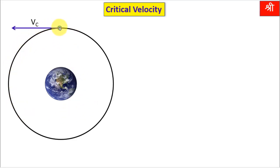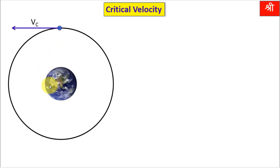This critical velocity is very important. If the horizontal velocity given to the satellite by the second stage of the rocket is not exactly equal to critical velocity, then the satellite will not revolve in a circular orbit. Either it will revolve in an elliptical orbit, or will escape Earth's gravitational field, or sometimes it may fall on Earth's surface.